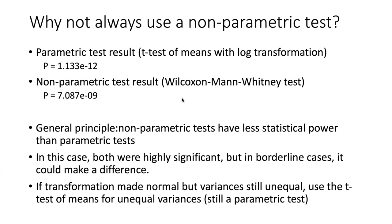We're not cheating and somehow making the groups more different by doing a better test. So you should always do the best test that you can — the one with the greatest power. There are circumstances where your transformation might make the data normal, but then when you run the test for homogeneity of variance, the variances could turn out to be unequal. There is an alternative: you can run a t-test for unequal variances. That still is a parametric test, so rather than going to a non-parametric test like WMW, you could use the t-test of means for unequal variances and still get that boost in statistical power.